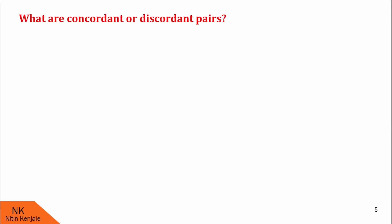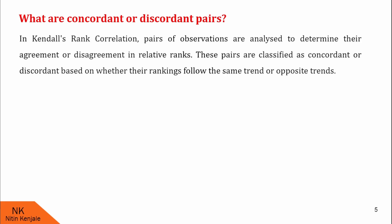Now let us understand what concordant and discordant pairs are. In Kendall's rank correlation coefficient, pairs of observations are analyzed to determine their agreement or disagreement in relative ranks. These pairs are classified as concordant or discordant based on whether their rankings follow the same trend or opposite trend. Let us understand them one by one.